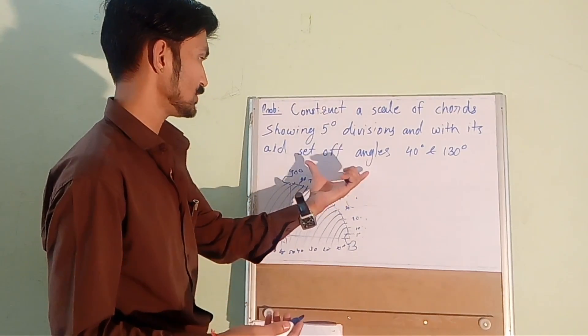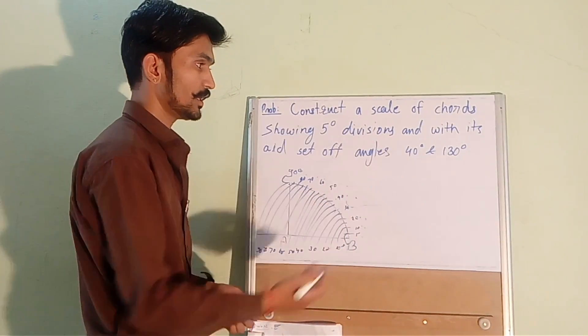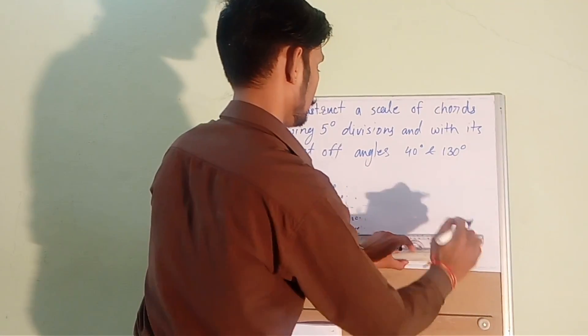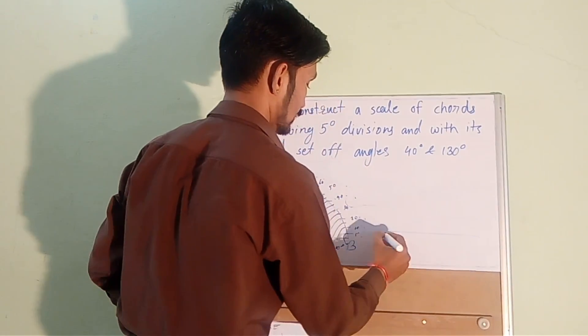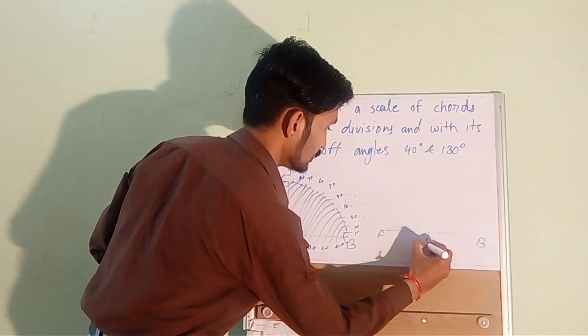Now we have to construct an angle of 40 degree and 130 degree. For constructing that angle what we need to do is we need to draw a line, say AB and P as its center.